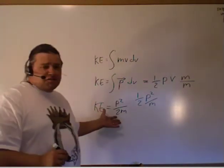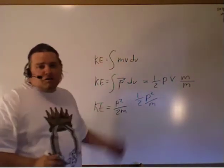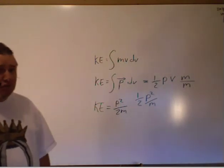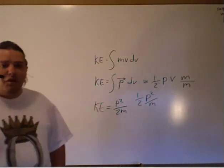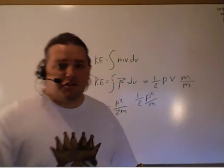So when we talk about the energy of something, we can talk about it as being one-half mv squared, which is certainly more common, or we can say it's p squared over 2m. That's just another way of expressing the kinetic energy of something.